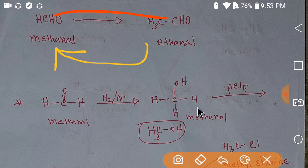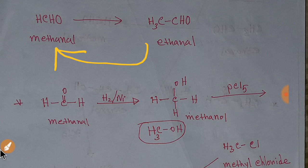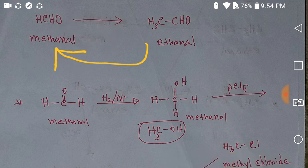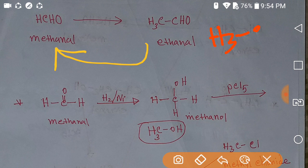Let me teach you the structure of methanal. The structure of methanal is HCHO — this is an aldehyde group. And the structure of ethanal has two carbons with a COH group.